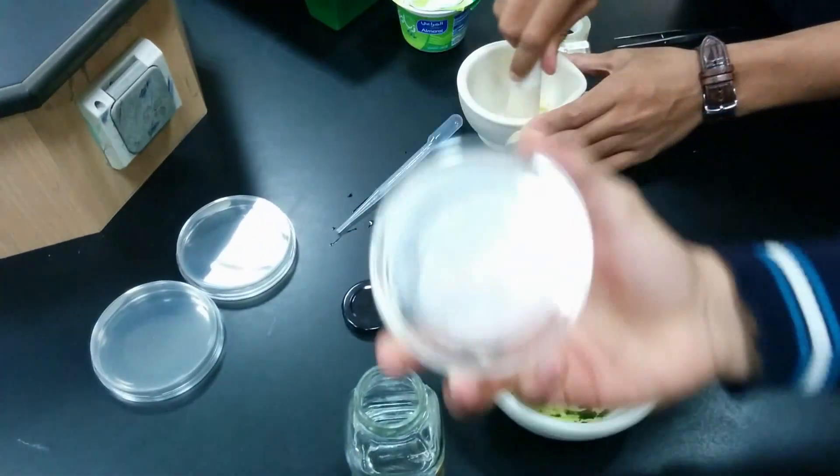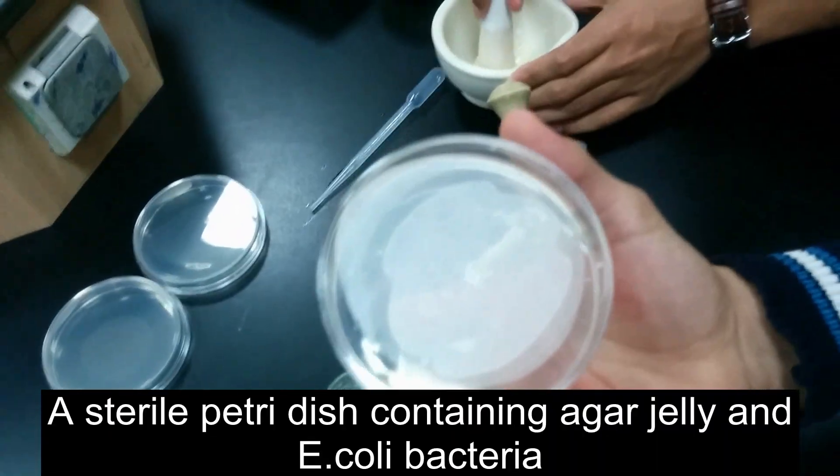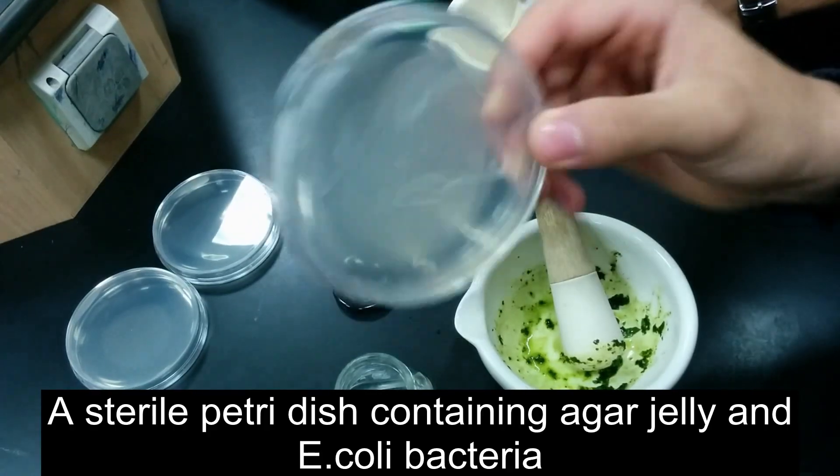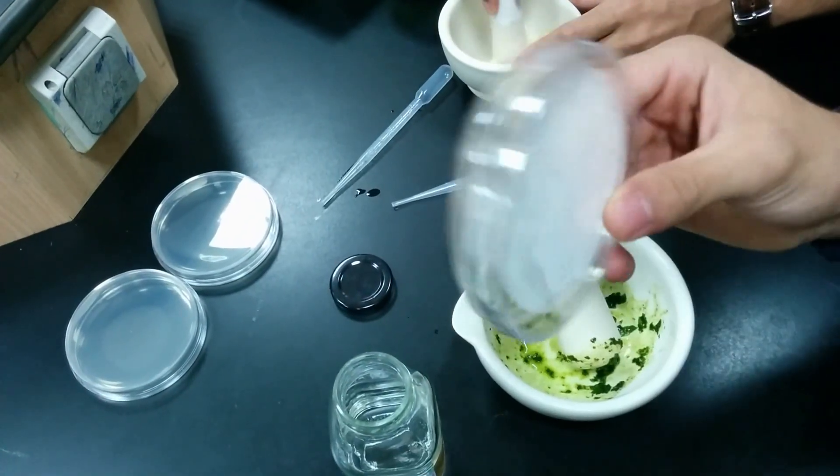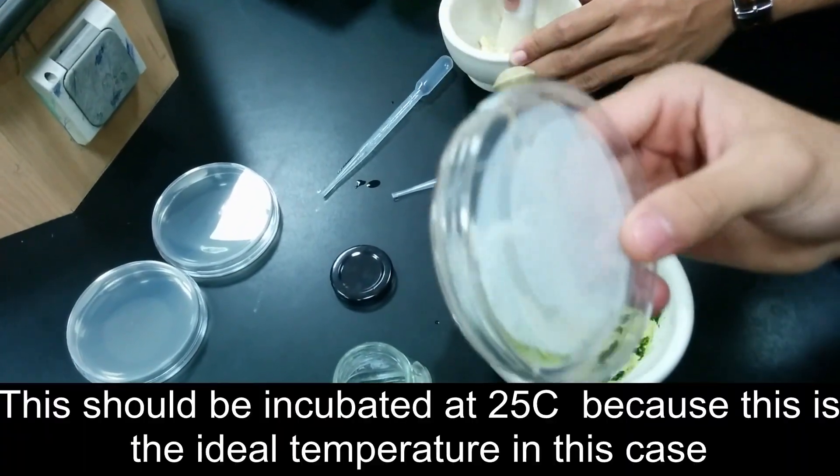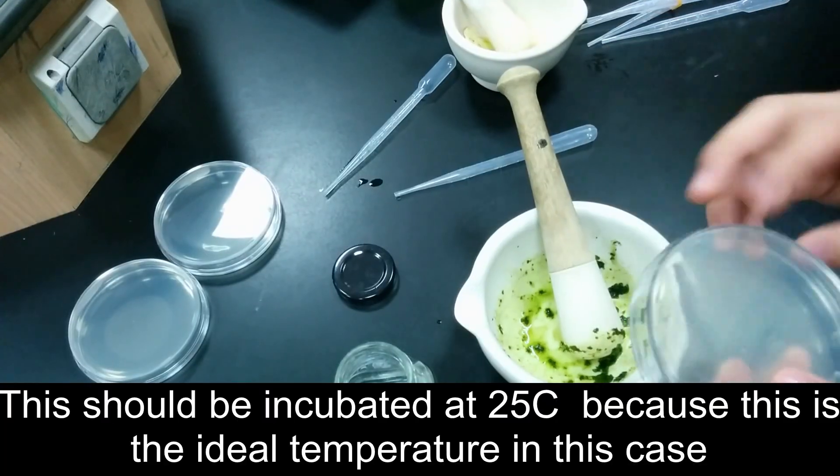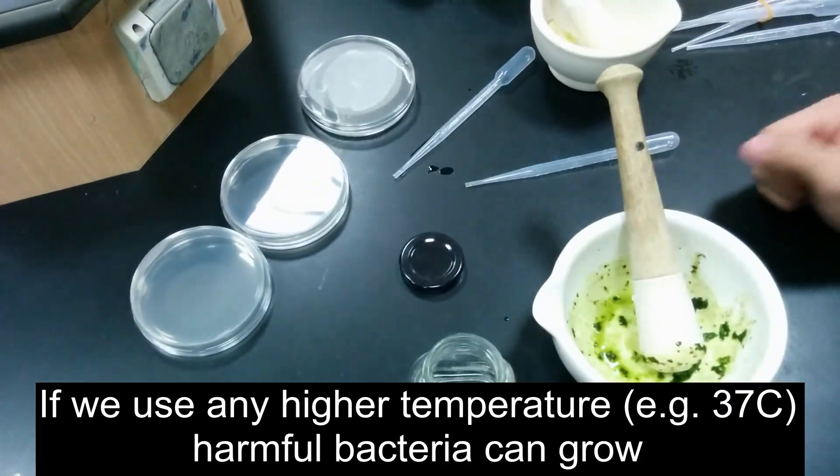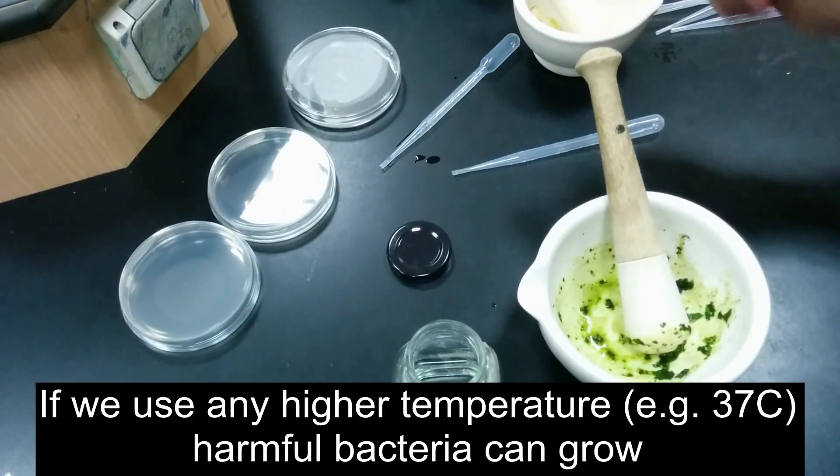In here, we have a sterile petri dish with agar medium mixed with some E. coli bacteria. The dish has to be incubated at 25 degrees because this is the ideal temperature for bacteria growth.